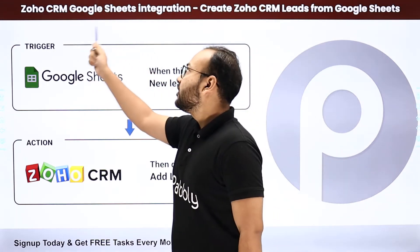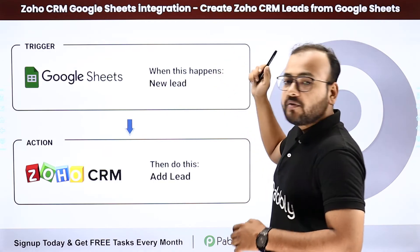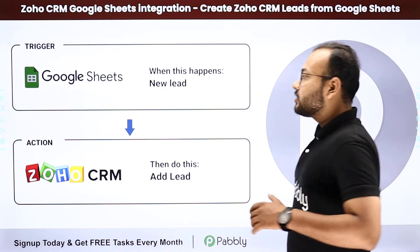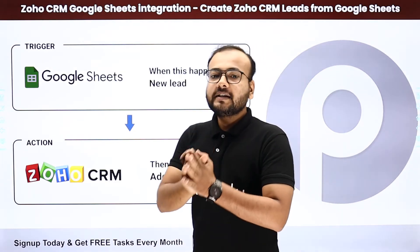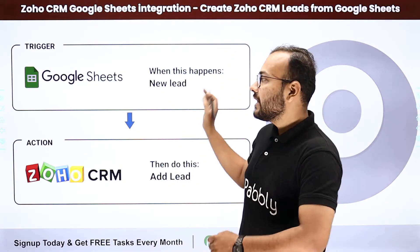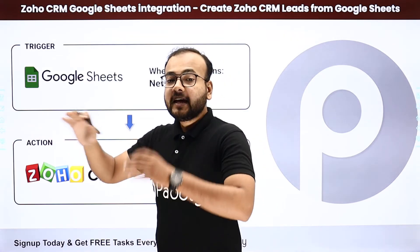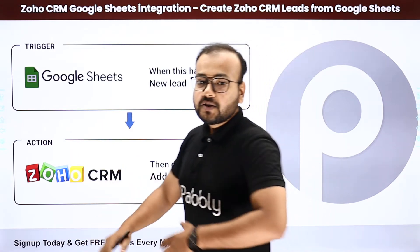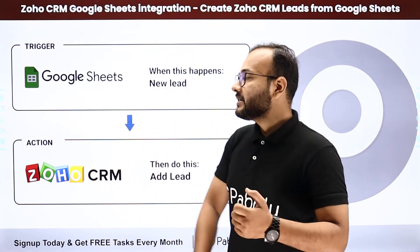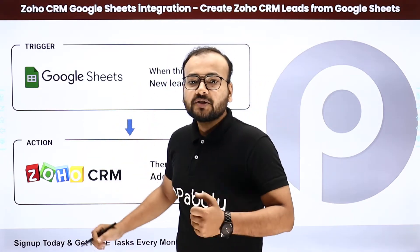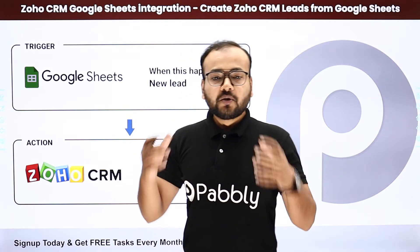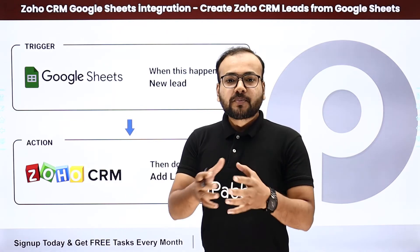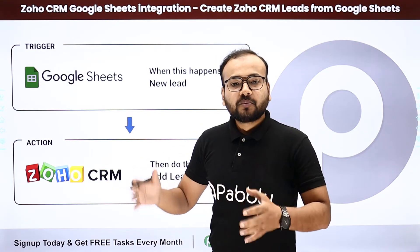The last but not the least, we have Zoho CRM and Google Sheets integration. With the help of this, you can create Zoho CRM leads directly from your Google Sheets. You just have to add the details of your leads inside a spreadsheet in Google Sheets and the same leads will be created in Zoho CRM automatically. You do not have to manually copy-paste the data between these two applications. That's how you can automate your CRM processes and boost your team's productivity in managing customer relationships.